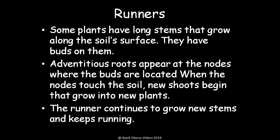Runners: some plants have long stems that grow along the soil surface with buds on them. Adventitious roots appear at the nodes where the buds are located and come out as shoots. When the nodes touch the soil, new shoots begin to grow into new plants. The runner continues to grow as a stem, and new plants keep forming from the nodes, allowing propagation to take place.